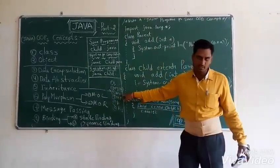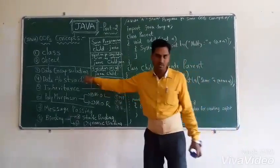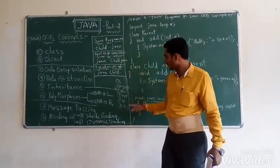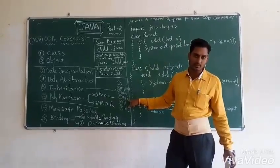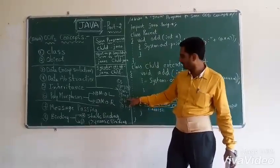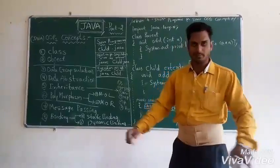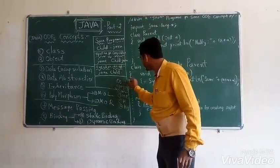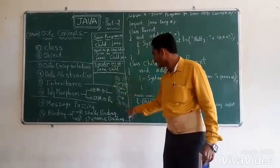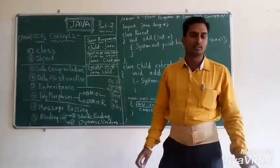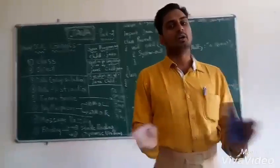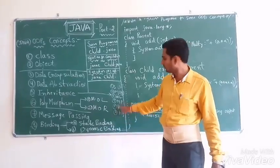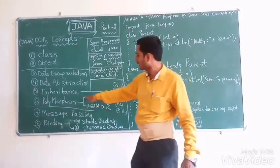Multi-level inheritance is not supported in Java. We also have multi-path inheritance, hierarchy inheritance, and hybrid inheritance. Hybrid means mixing of two or more other types of inheritance. So we have totally six types of inheritance.